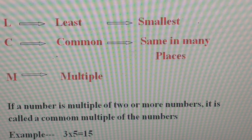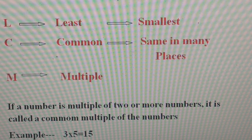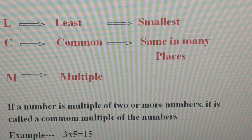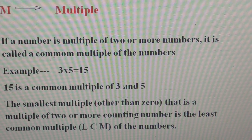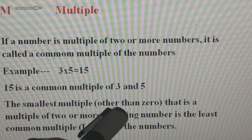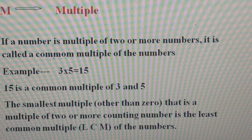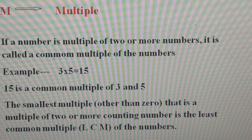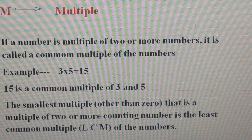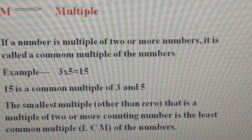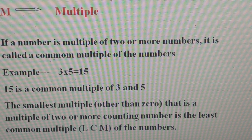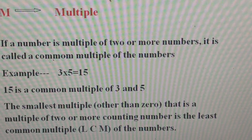For example, 3 multiplied by 5 equals 15, and 5 multiplied by 3 equals 15, so 15 is a common multiple of 3 and 5. The smallest multiple other than 0 that is a multiple of 2 or more counting numbers is called the Least Common Multiple, or LCM. We say other than 0 because 0 is a multiple of each and every number and it is uncounted.